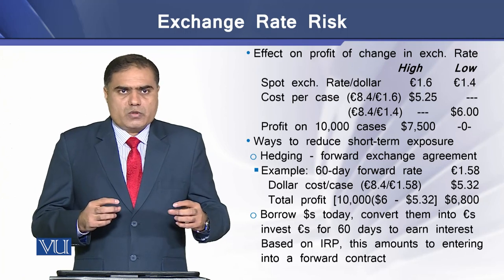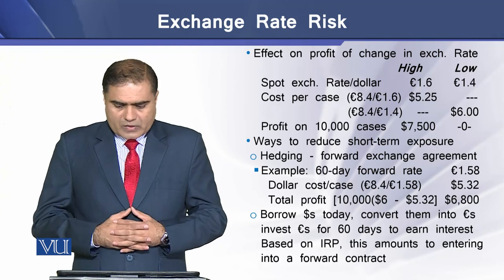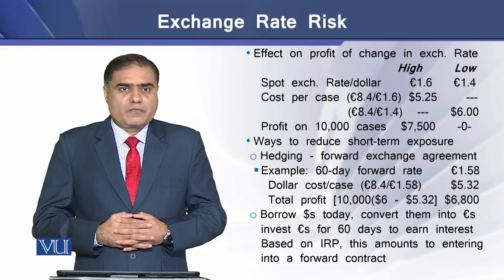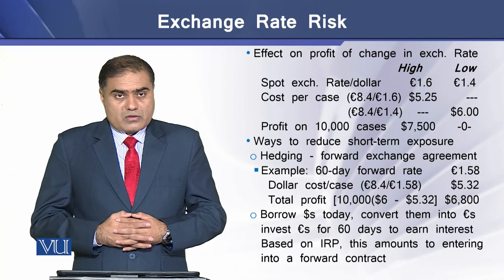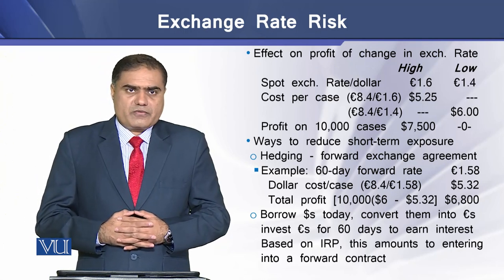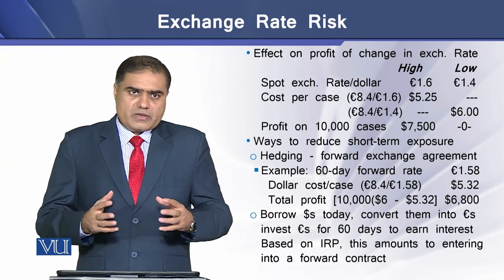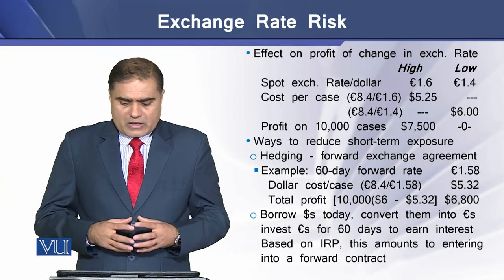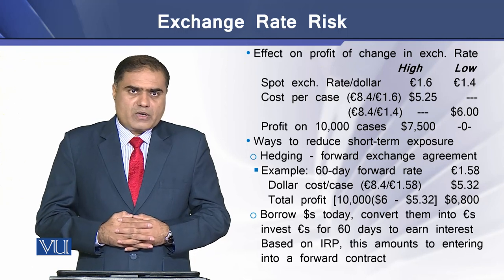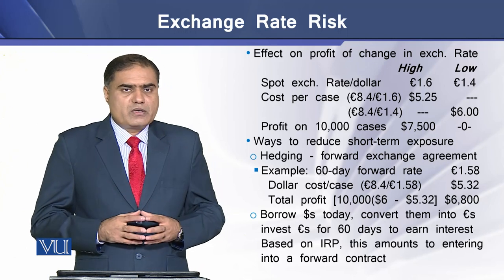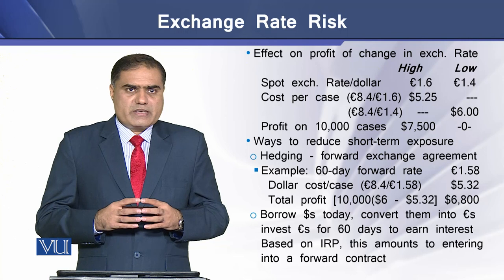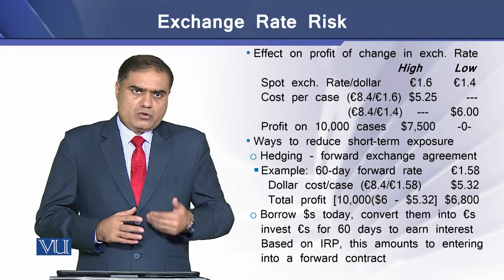The cost per case in dollars will be $5.25 in the case of higher movement (1.6) and $6.00 in the case of lower movement (1.4). On the sale of 10,000 cases, where there is an upward movement to 1.60 euros per dollar the firm earns $7,500, whereas with a lower movement to 1.4 euros per dollar the firm incurs no profit and no loss. This is how exchange rate movement can turn a profitable situation into a break-even one.